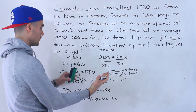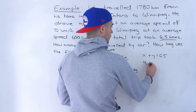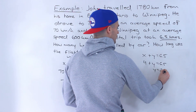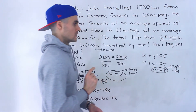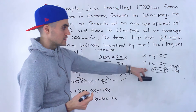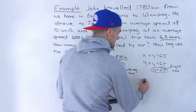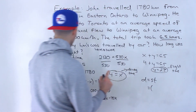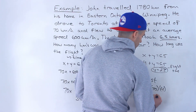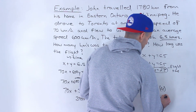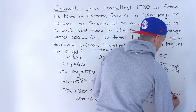From Toronto to Winnipeg he flew, and to find the flight time it's easiest to use x plus y equals 6.5. If x is 4, then y equals 2.5 — that's the flight time and the answer to the second question: the flight was two and a half hours. For the first question — how many kilometers was traveled by car — distance equals speed times time: 70 times 4 equals 280 kilometers.